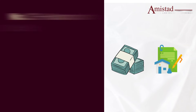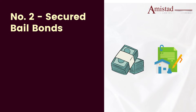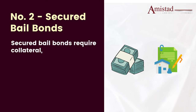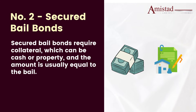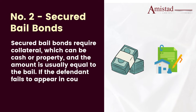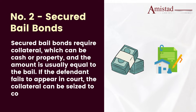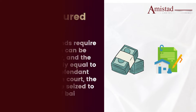Number two: secured bail bonds. Secured bail bonds require collateral, which can be cash or property, and the amount is usually equal to the bail. If the defendant fails to appear in court, the collateral can be seized to cover the cost of bail.